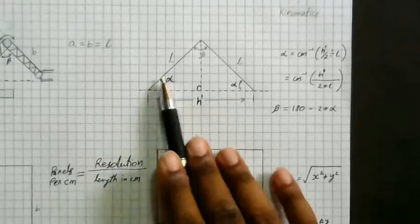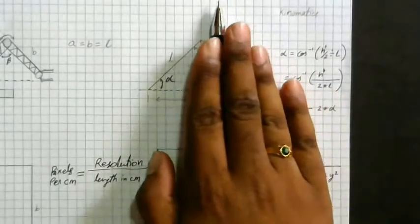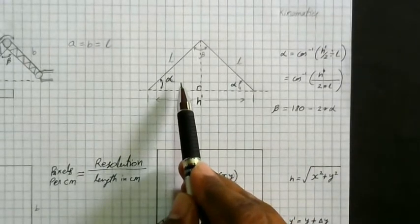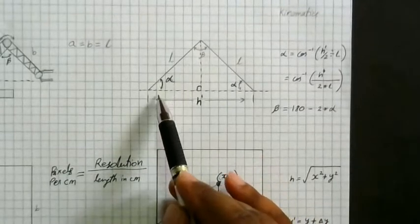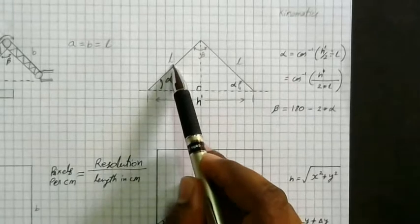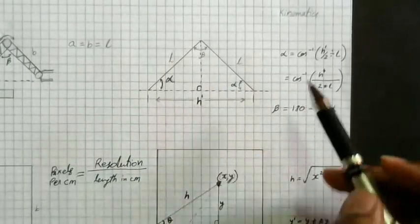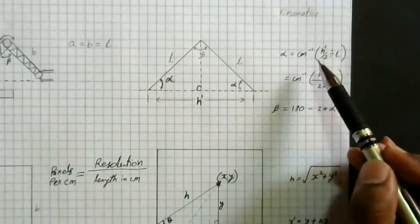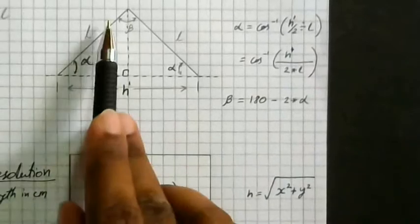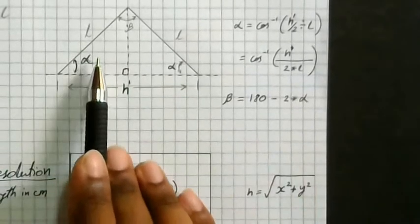So how do you calculate alpha and beta? It is very simple. What I do is divide this isosceles triangle in half. Concentrating on the left-side triangle: this line is h-dash divided by 2, and this is L. L is the hypotenuse, and for alpha the adjacent side is h-dash divided by 2. So alpha equals cos inverse of (h-dash divided by 2) divided by L. This is the formula which gives you the angle alpha.